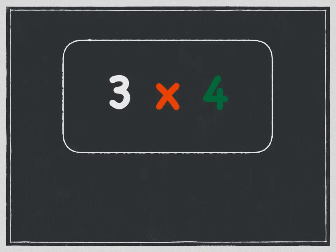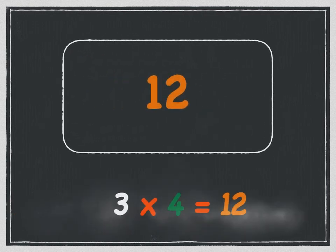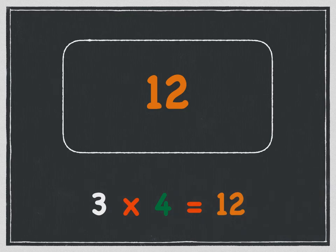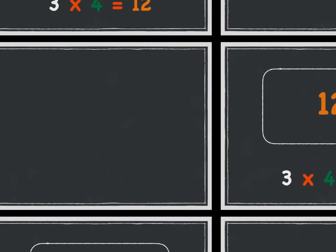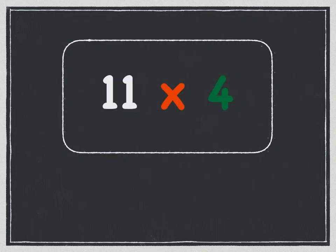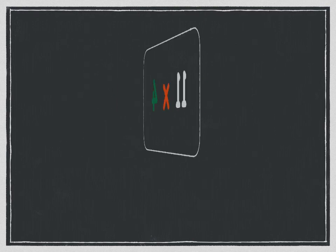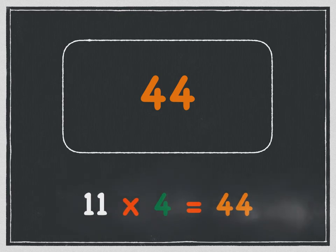Three times four is twelve. Three times four is twelve. Eleven times four is forty-four. Eleven times four is forty-four.